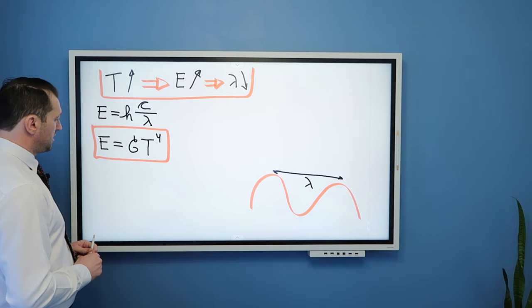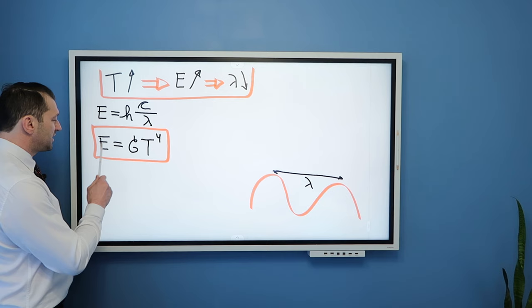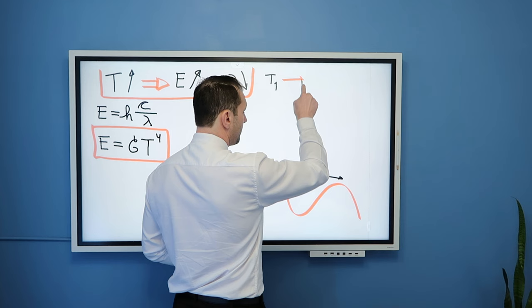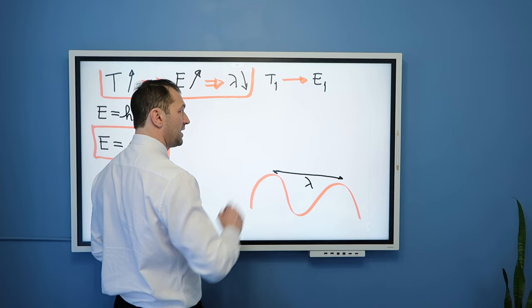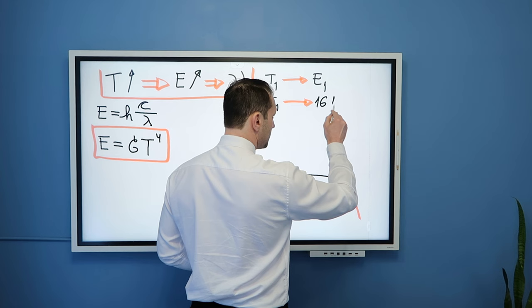Because it demonstrates that small changes in temperature result in profound changes in the energy emitted by our object. Say that we have some temperature T1, whatever it is. That temperature will give energy E1. Now I double temperature. I double temperature of the object. You can see from this relationship that the energy will increase 16 times.